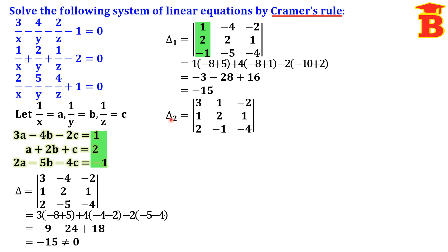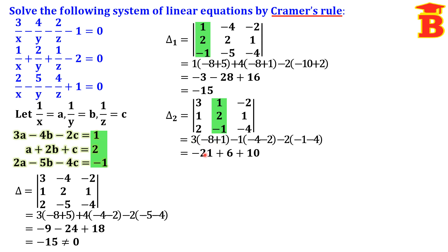Del 2: replace the second column by constants 1, 2, minus 1, keeping first column 3, 1, 2 and third column minus 2, 1, minus 4. Expanding: 3 into minus 7 is minus 21; minus 1 into minus 6 is plus 6; minus 2 into minus 5 is plus 10. Adding gives del 2 equals minus 5.